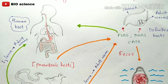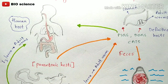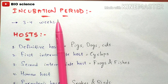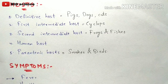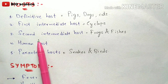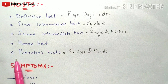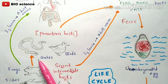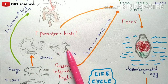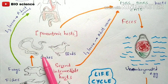This completes the life cycle of Gnathostomiasis, mainly caused by Gnathostoma spinigerum or Gnathostoma hispidum. The incubation period for this disease is 3 to 4 weeks. There are totally 5 hosts involved: definitive hosts, first intermediate hosts, second intermediate hosts, human hosts, and paratenic hosts. The paratenic hosts are snakes and birds — including ducks — where the L3 larvae are inactive but infective.